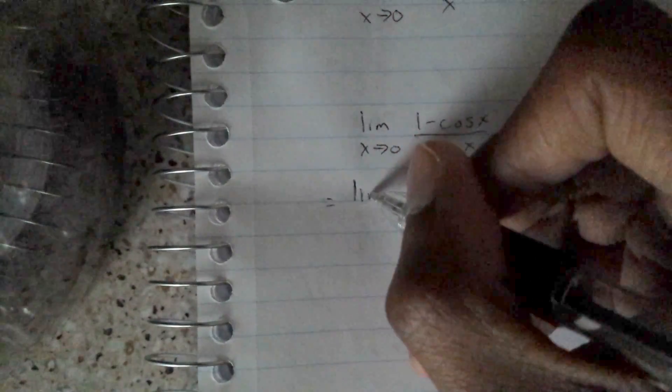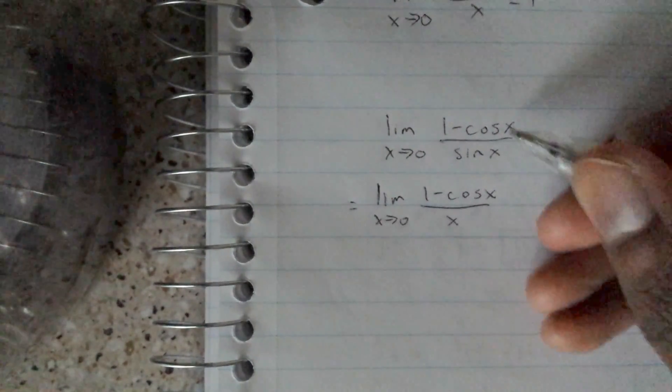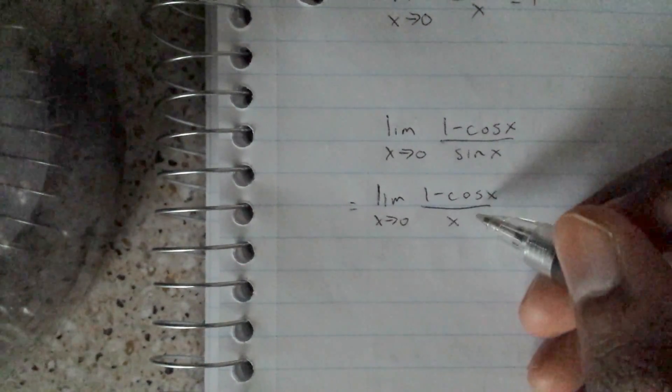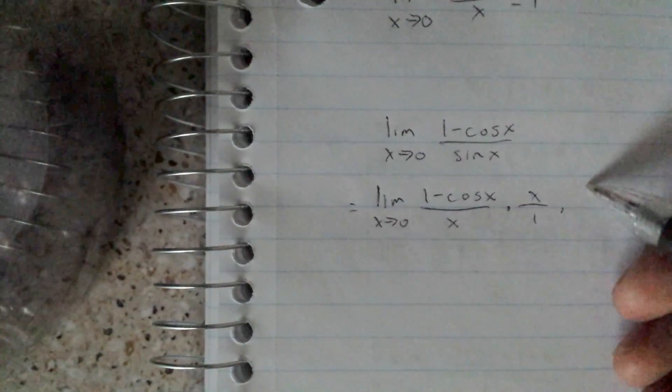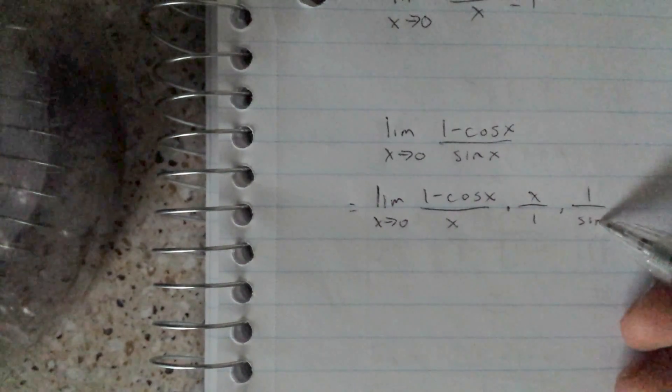Limit as x approaches 0 of 1 minus cosine x, let's put x right there. Since we're multiplying the bottom by x, we have to multiply the top by x. Don't forget about this one - it's on the bottom, so it's sine over x.